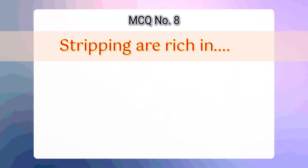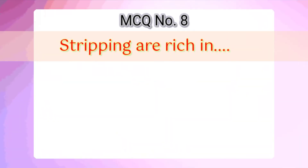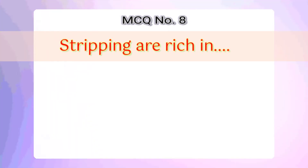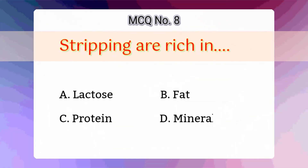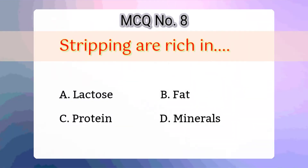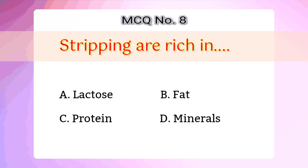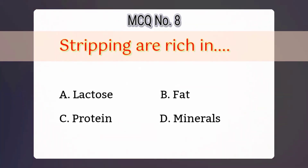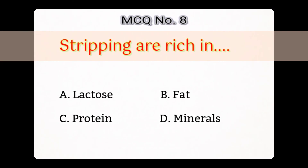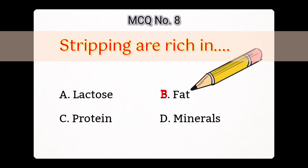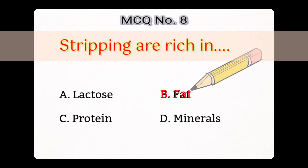8th question: Strippings are rich in — Option A: Lactose, B: Fat, C: Protein, D: Minerals. Answer is B: Fat.